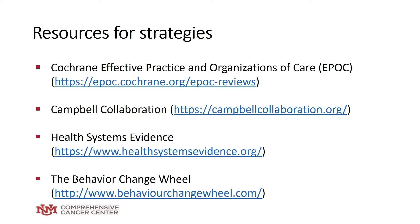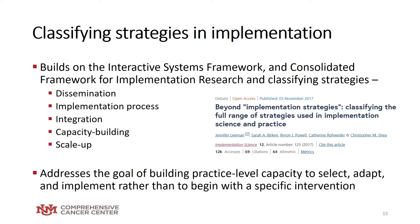There are several resources for selecting strategies, including Cochrane's effective practice and organizations of care systematic reviews, the Campbell Collaboration evidence reviews, Health Systems Evidence, and the Behavior Change Wheel by Susan Mischie and colleagues. A newer concept in the literature is classifying strategies based on specific implementation processes — building on the interactive systems framework and CFIR, Dr. Lehman and colleagues thought about classifying strategies for dissemination, specific implementation processes, integration into existing workflow, building capacity, or scale-up. This addresses building practice-level capacity to select, adapt, and implement rather than beginning with a specific intervention in mind.